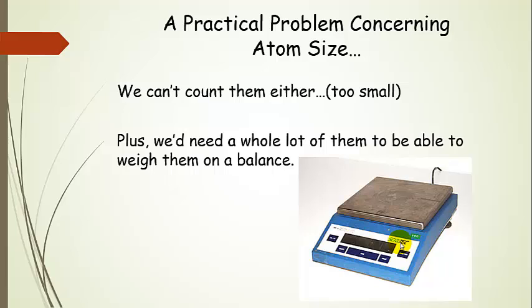We can't really just count atoms either because they're too small. And even if we could, we would need a whole ton of them to be able to weigh them on a balance — we would need lots and lots of them. So we definitely have a problem. So how can we solve this?